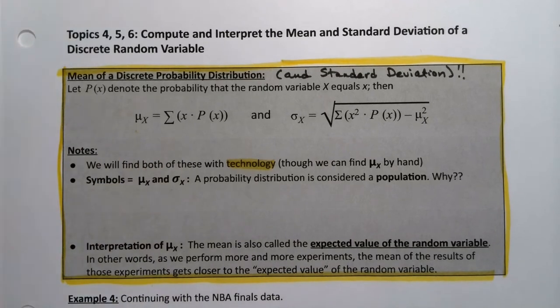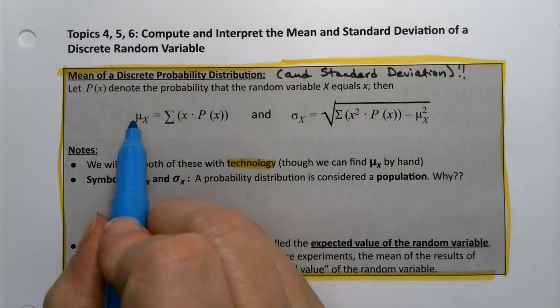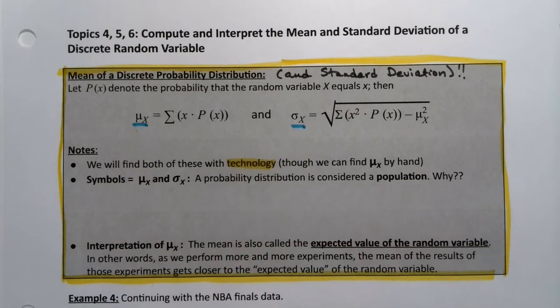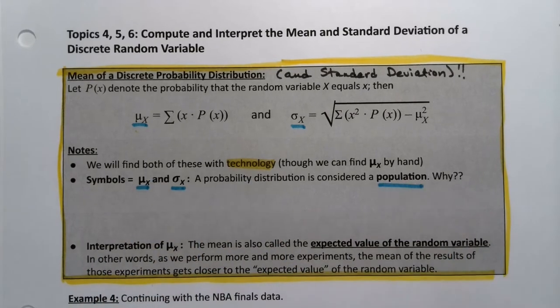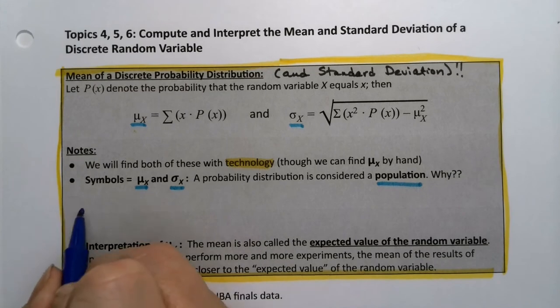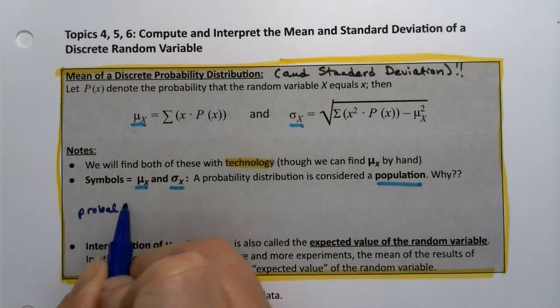Now you'll notice it uses μ and σ, and that's not an accident. We're using here the symbols μ and σ, those are population values. So that means that when we find the mean and the standard deviation, we are working with a population. Now why is that the case?